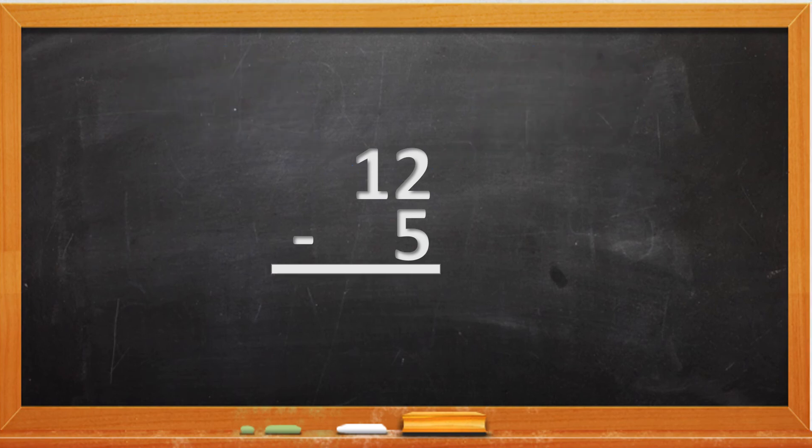So the 1 becomes a 0 and the 2 becomes a 12. And now here's a little trick. Instead of taking 12 minus 5, what we do is we take 10 minus 5. The answer will be 5. Then we add the 2. And 5 plus 2 will be 7. So 12 minus 5 will be 7.